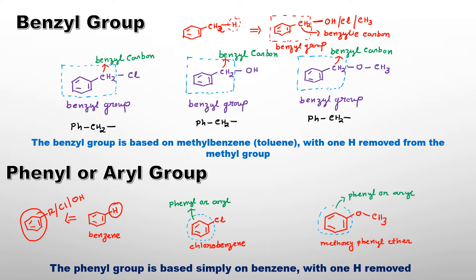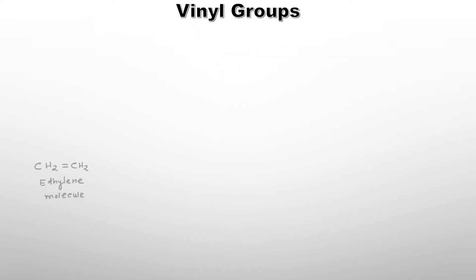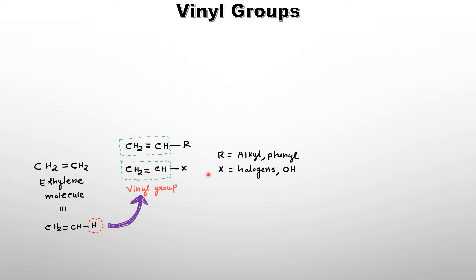Now I think you understand the difference between the benzyl and phenyl group. Let's understand vinyl groups. Suppose we have a molecule like ethylene. If we replace one hydrogen from either carbon — left-hand side or right-hand side — with any group like halogens, alkyl, or OH, then the group we get is called the vinyl group: CH2=CH–. This is the vinyl group, generating from the ethylene molecule where one hydrogen is replaced with some other group.